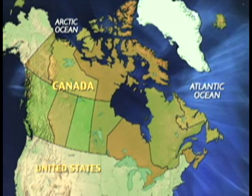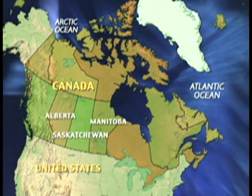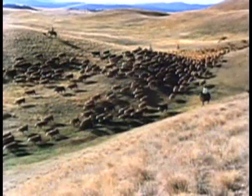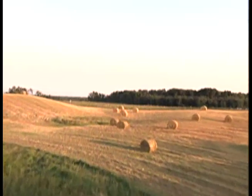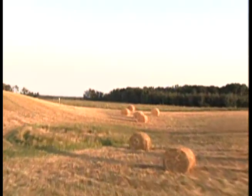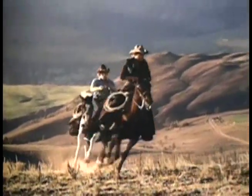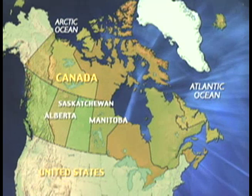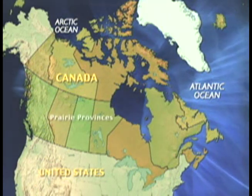Spreading throughout Manitoba, Saskatchewan, and Alberta is a wide expanse of level land where grazing cows and farmlands are common sights. This is Canada's farming heartland — the Canadian plains. Manitoba, Saskatchewan, and Alberta together are called the Prairie Provinces.